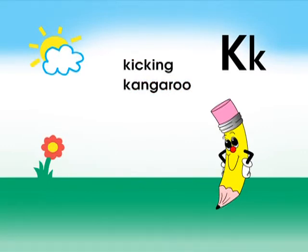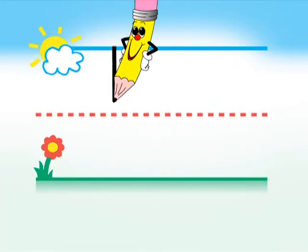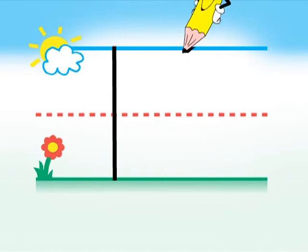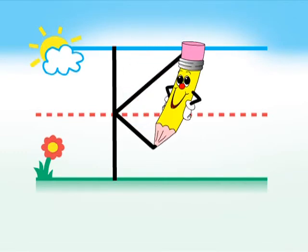Cool! To write the capital letter K, start at the sky and pull down to the ground. Go back to the sky and slant left to the fence. Stop. Slant back right to the ground.